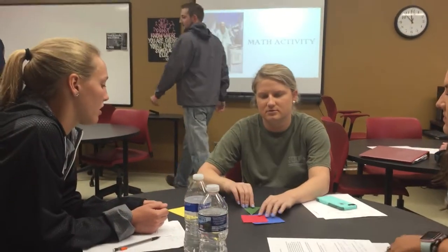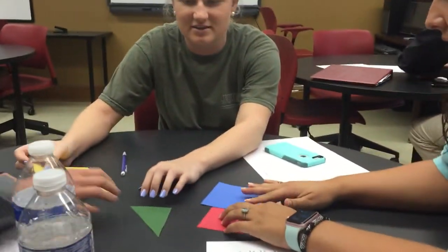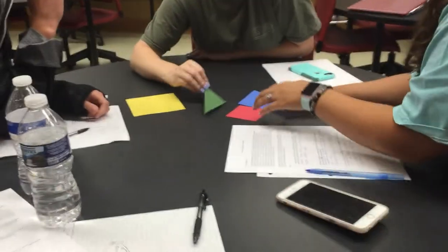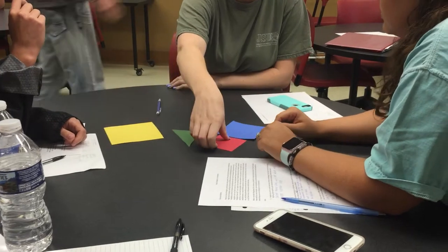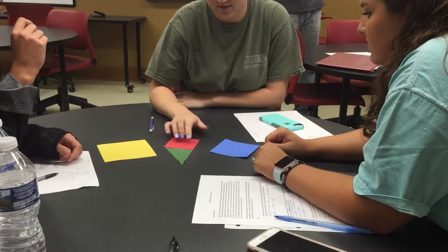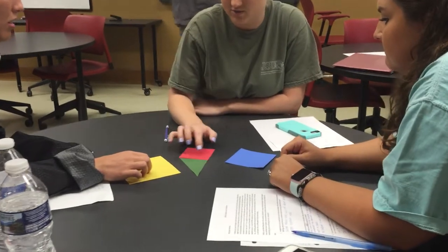So what I'm giving you right now is three squares and a triangle. What I want you to do is kind of try to piece these together, and you might kind of see how it works pretty quickly. See if you can make them fit — think about which ones might go together.